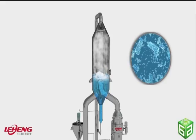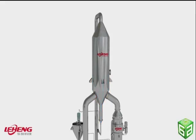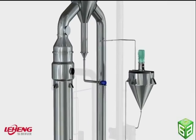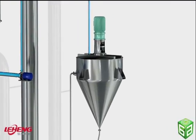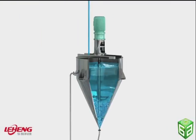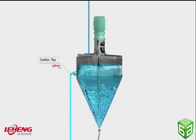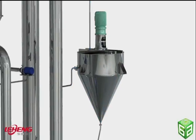Slurry will then be discharged to the thickener from the discharge outlet at the bottom of the crystallization separator. Slurry flows into the thickener through the liquid feeding groove. Clear fluid is discharged from the overflow pipe. The mixing propeller rotates at a constant speed, which helps to concentrate sediment before discharging to the centrifugal.